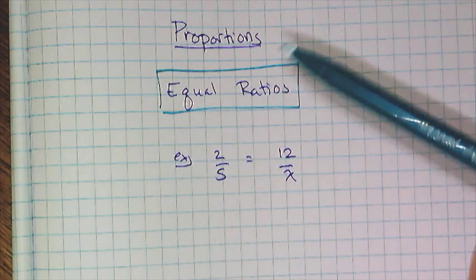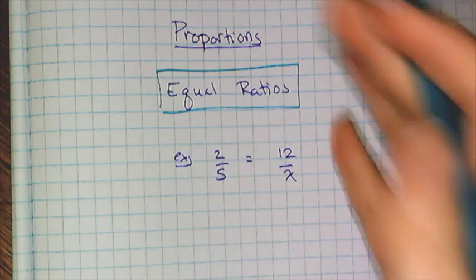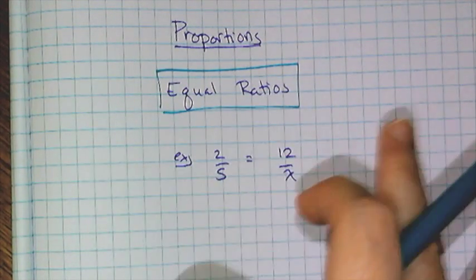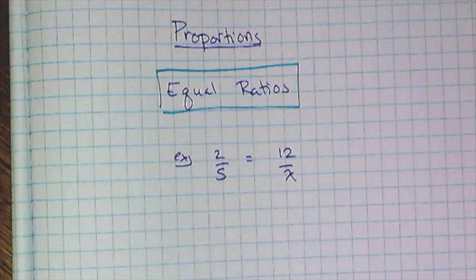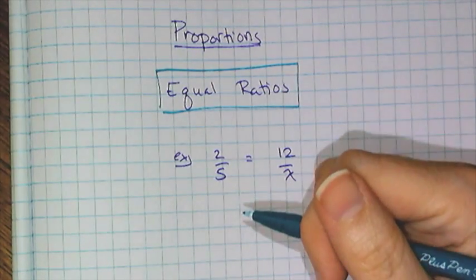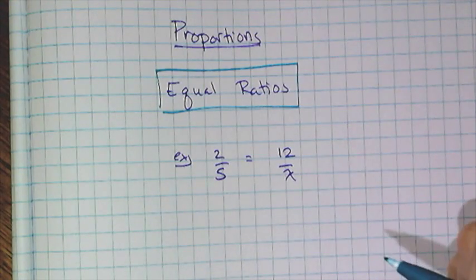Hello, everybody. In this video, we are going to review proportions. I know for a fact that in all of the pre-algebra classes, as soon as you learn what a fraction is, you have to start solving proportional reasoning problems. And all a proportion really is, it's just equal ratios. So equivalent fractions are examples of proportions. They're usually disguised in word problems like estimating sizes of populations or scaling up figures and finding unknown side lengths.